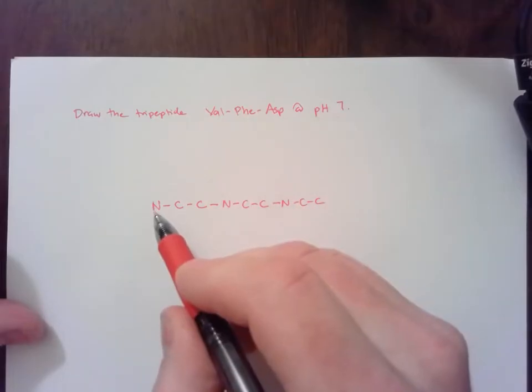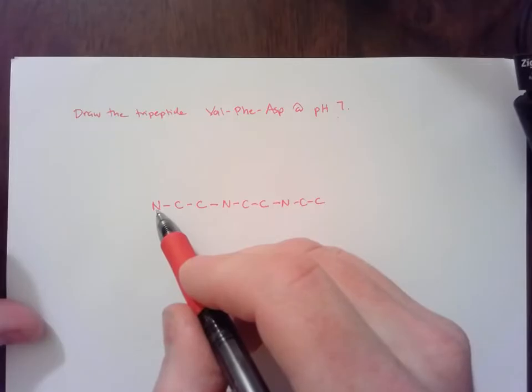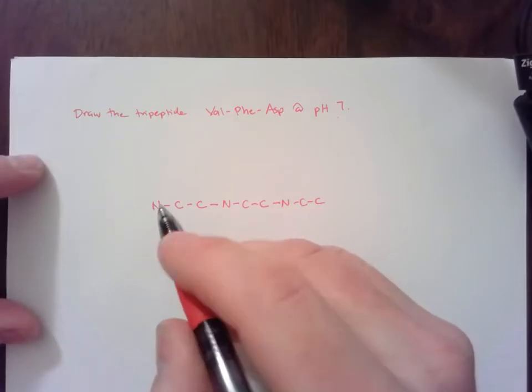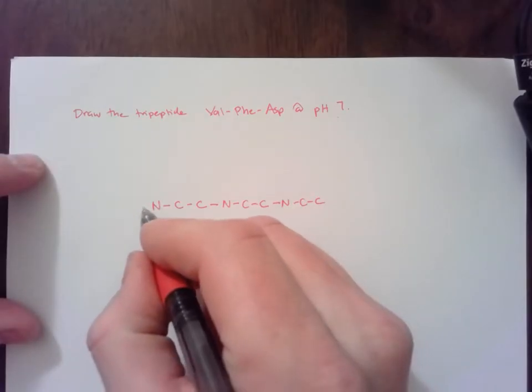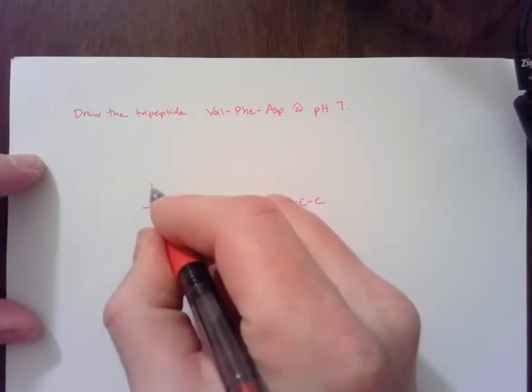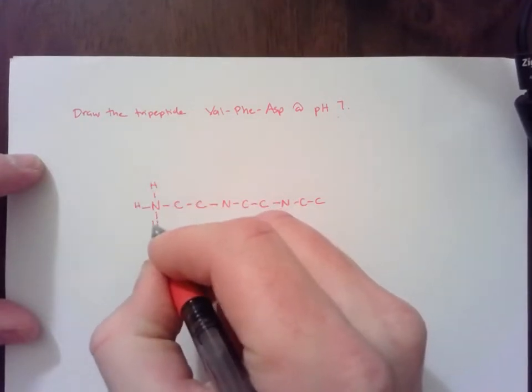I know that my N-terminus, which is a primary amine, is going to be protonated, meaning it's going to have three hydrogens attached to it, and it's going to be positively charged. So I'll put three hydrogens on that.